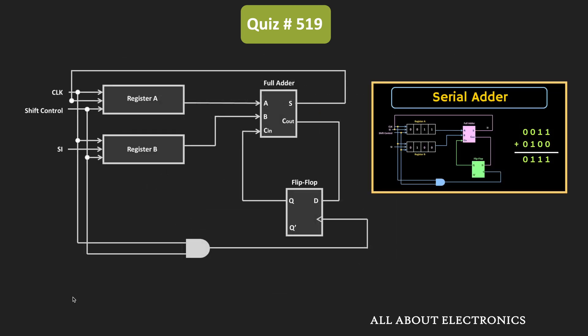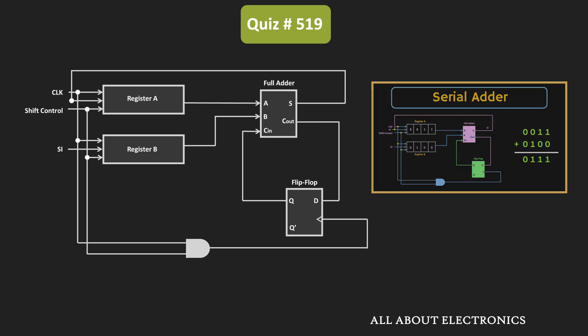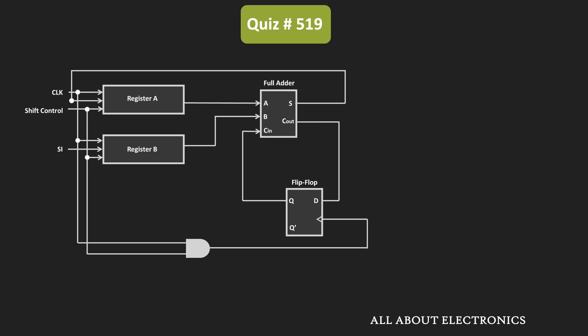Recently on the main channel, we have seen how this serial adder circuit works. Each register in the circuit is 16 bits and the clock frequency is 16 MHz. Through the serial input, the input signal is applied to the circuit. Initially, before the addition, we assume all registers have been cleared — that means the content of each register is equal to 0. Through the serial input, the numbers are fed into registers A and B serially, with each clock pulse.